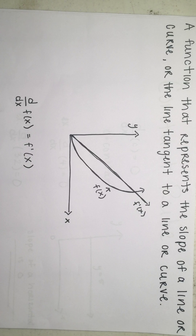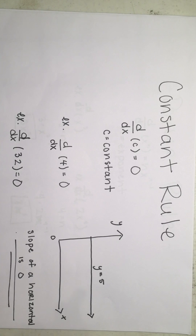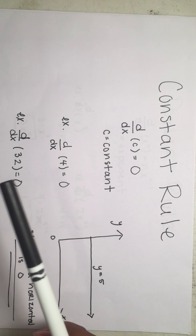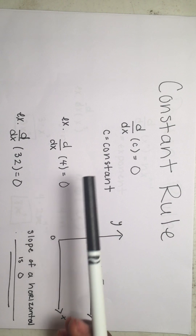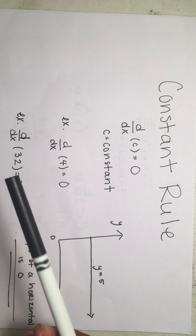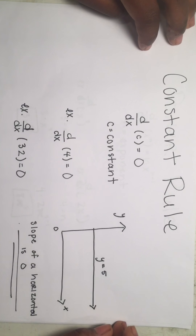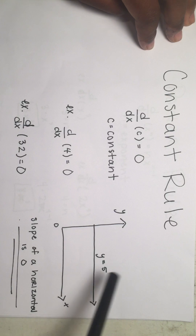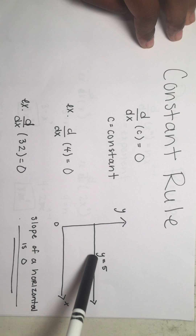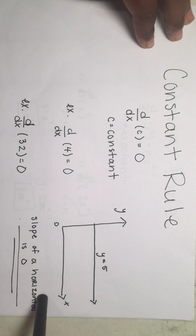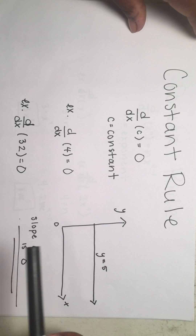There are multiple rules in order to find the derivative algebraically, and we're going to go through them one by one. The first rule is the constant rule, which states that the derivative of any constant — any number without a variable — is equal to zero. So the derivative of four is zero, the derivative of 32 is zero. It doesn't matter how large the constant is; as long as it's a constant, it's always going to be zero. We can prove that in the coordinate plane: the line y equals five is horizontal, so the slope is always zero.